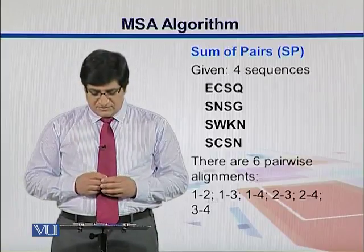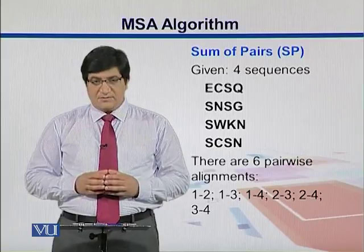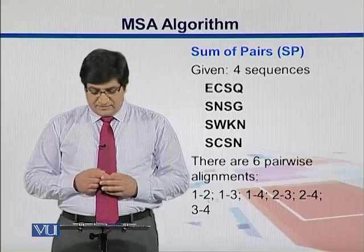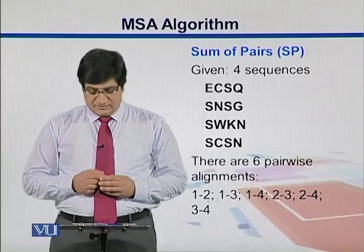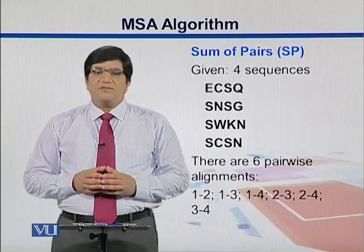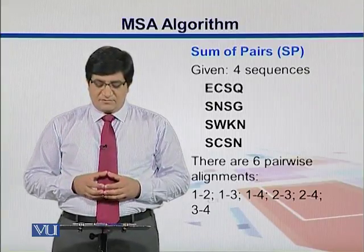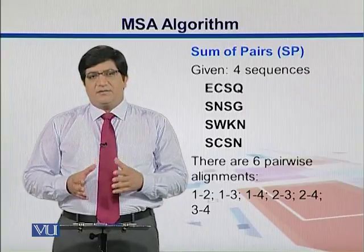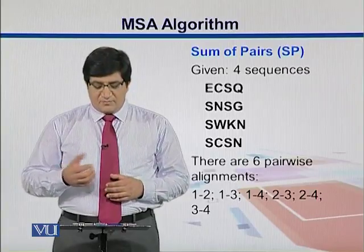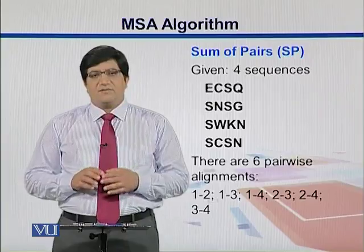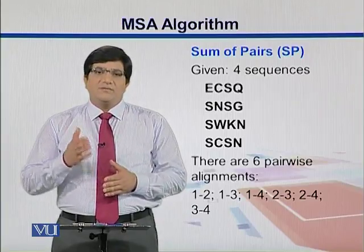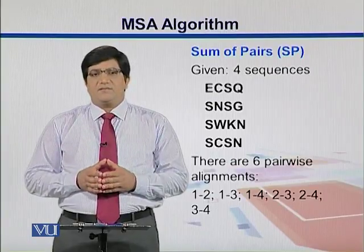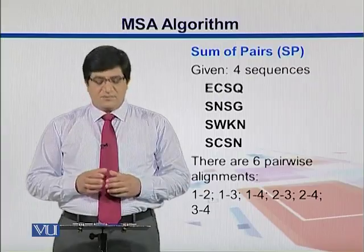We have four sequences — these are amino acid sequences, protein sequences like EC, SQ, SN, SG, SWKN, SC, and SN. How many pairwise comparisons can we have if we have four sequences? We see that there are six pairwise comparisons if we remove the duplicate comparisons. We can compare sequence 1 with 2, 1 with 3, 1 with 4, then 2 with 3, 2 with 4, and finally 3 with 4. So in total, we have six possible comparisons for four sequences.